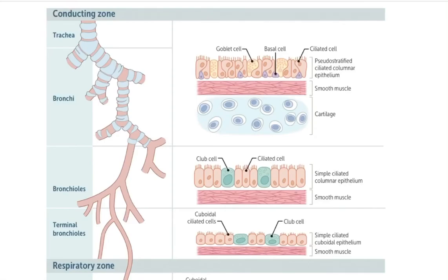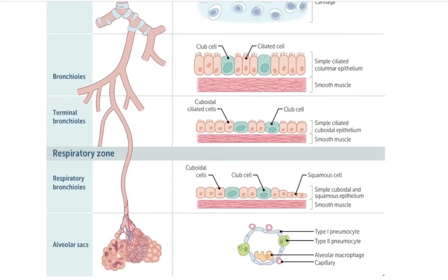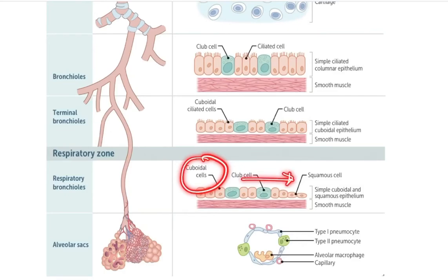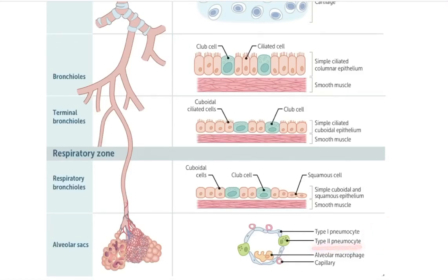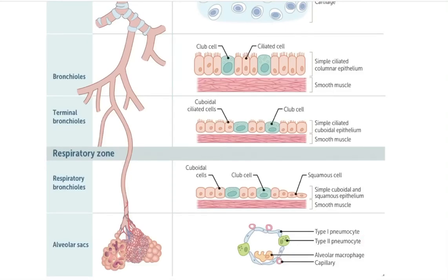The respiratory system consists of respiratory bronchioles, alveolar sacs, and alveoli. Cuboidal cells transition into squamous cells. There are two important cell types: type 1 and type 2 pneumocytes. Type 2 pneumocytes are responsible for production of surfactants. Alveolar macrophages help in immune response and clear cell debris.